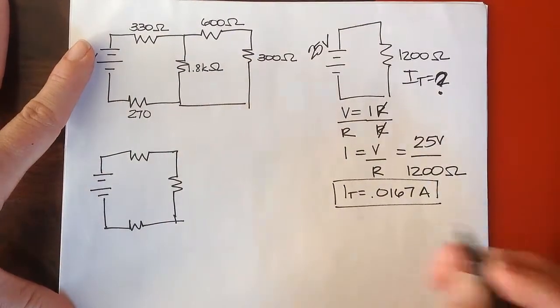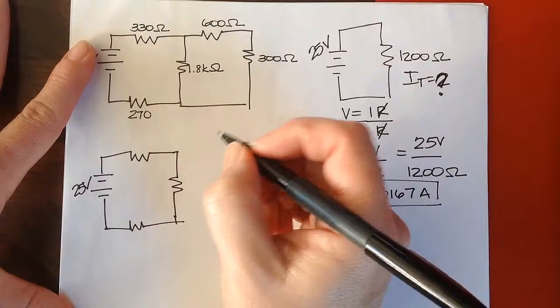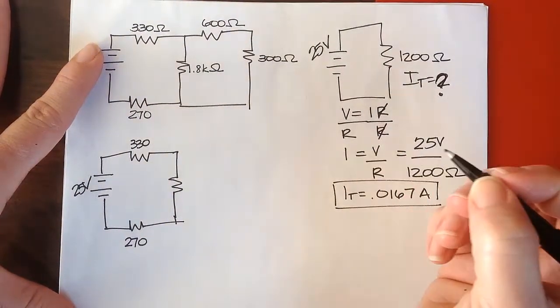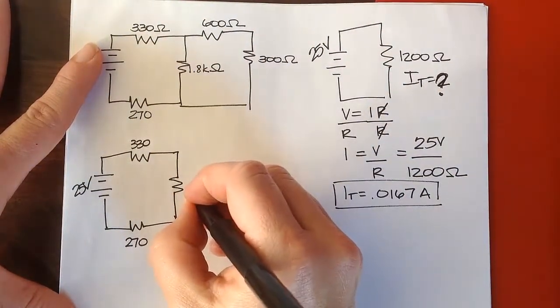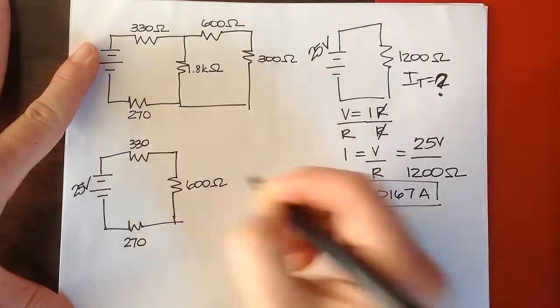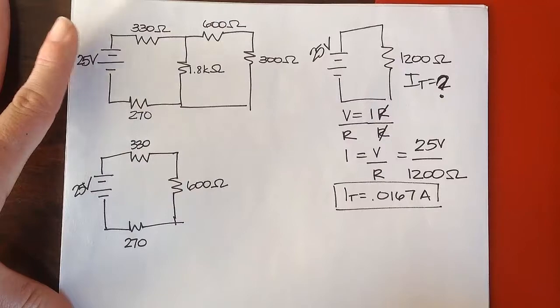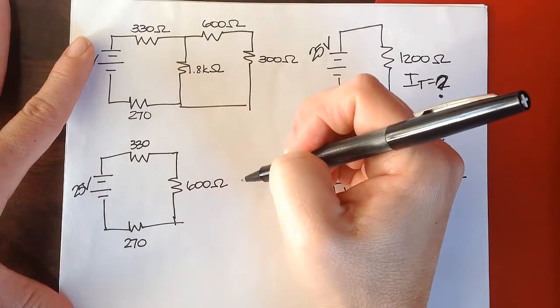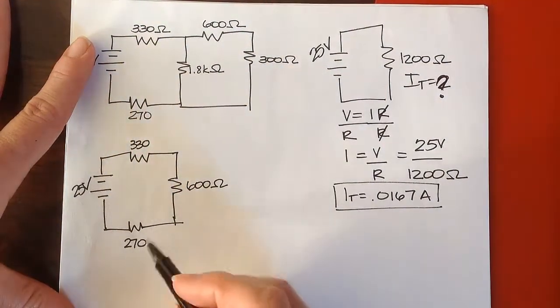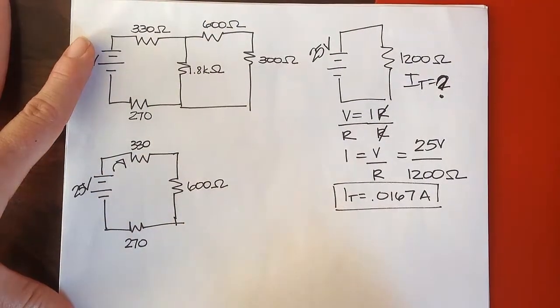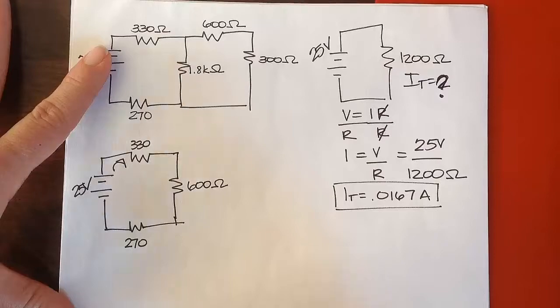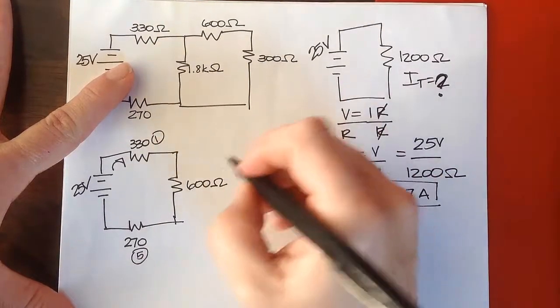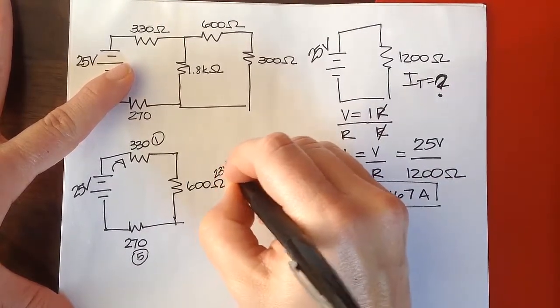And so this was 25 volts, and this was 330, 270, and this was 600 ohms. Now, the voltage drop, we're going to have a voltage drop across each one of these components. This is, again, an equivalent circuit. And so, let's look at what each one of those is. In our original circuit, this was 1, this was 5, and then this is the equivalent of 2, 3, and 4.